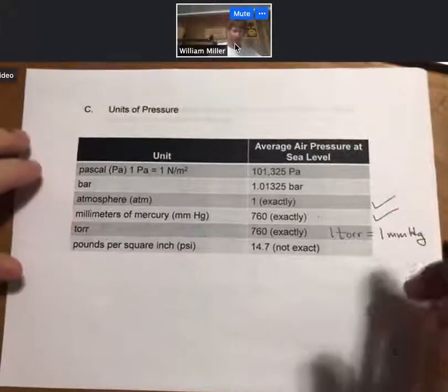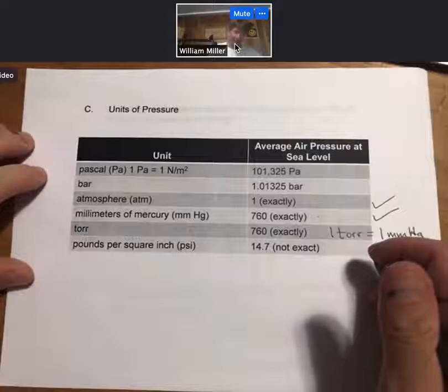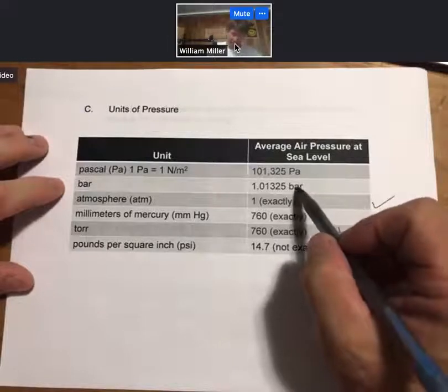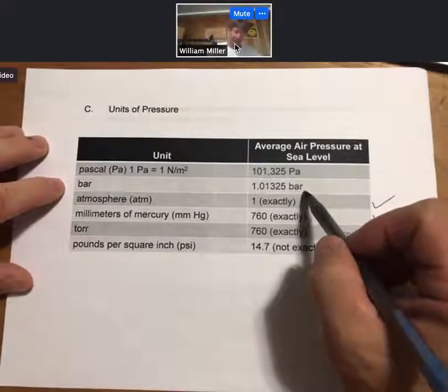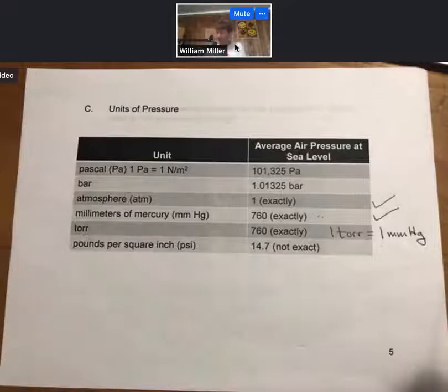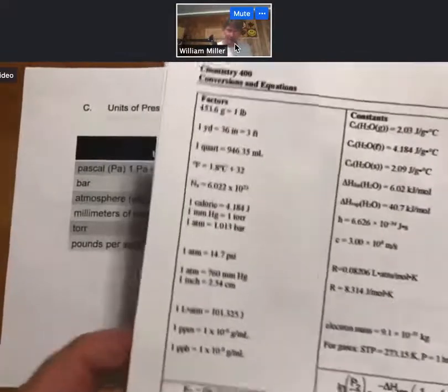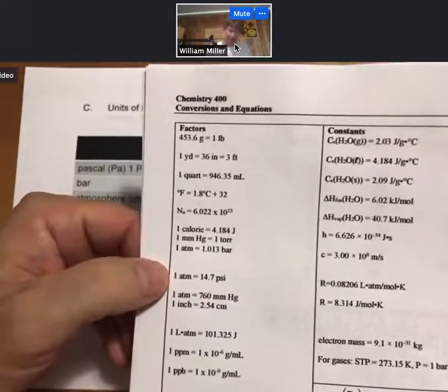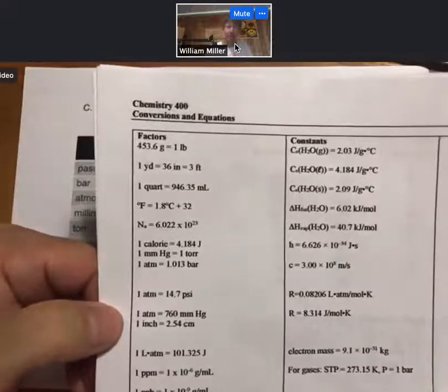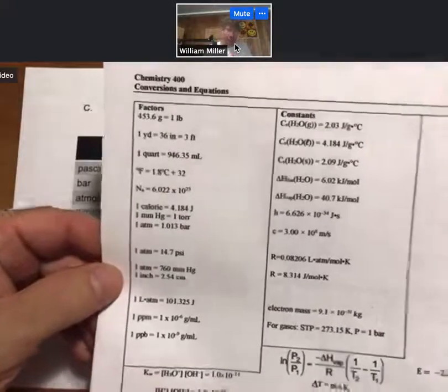None of these units that I've gone over are the SI unit of pressure. The SI unit of pressure is the Pascal, and a bar is defined as 100 Pascals. We will occasionally use these units. You'll find that most of the units you need are on the conversions and equations sheet. We have atmospheres to PSI, millimeters of mercury to torr, to bar. Use this when you're solving problems on homework, quizzes, or exams.